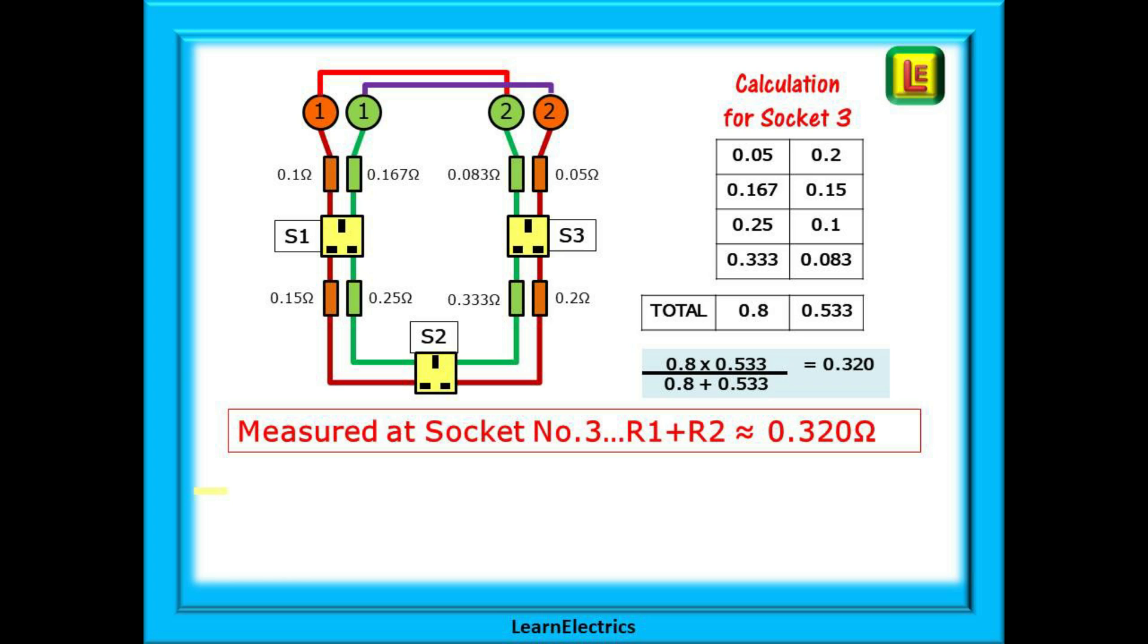Socket number 3 is approached in just the same way. Pause the video and list the resistances in one direction and then the resistances in the other direction. Do the multiply, add, divide calculation and this time we have a resistance value of 0.320 ohms. Measuring the resistance should be about the same value for R1 plus R2.